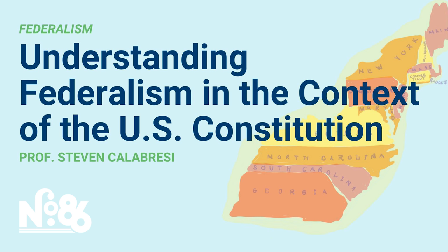Where is federalism today — is it still relevant? The argument for federalism comes back to the famous quote from Lord Acton: power corrupts, and absolute power corrupts absolutely. The separation of powers, like the Aristotelian mixed regime, was a response to that fact. It's good to separate power among three branches of the federal government and to have bicameralism in the legislative branch, but it's even better to combine those benefits with a further division of power between the national government and the state governments. In the United States, we have that degree of protection.